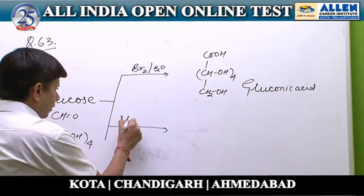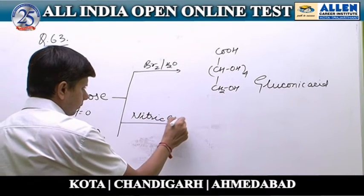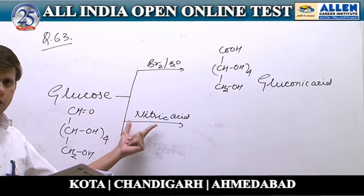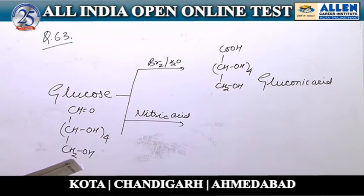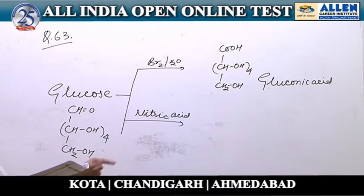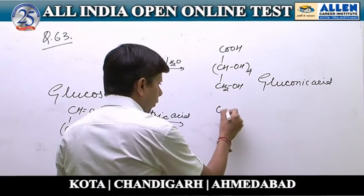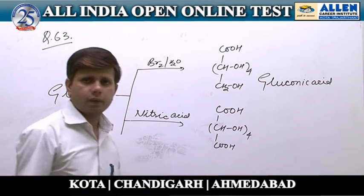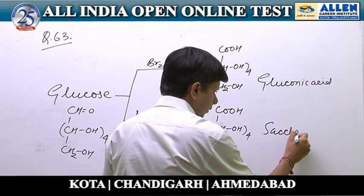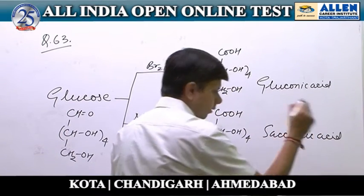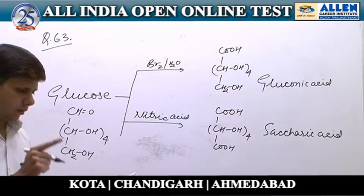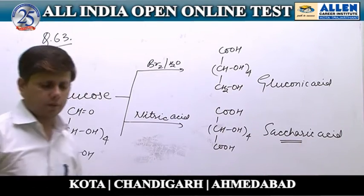Second option: glucose reacted with nitric acid. Nitric acid, being an oxidizing agent, oxidizes the aldehyde group but also oxidizes the primary alcoholic group. This gives saccharic acid, not gluconic acid. So the option stating glucose with nitric acid gives gluconic acid is incorrect.